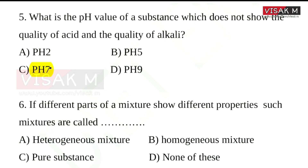pH 7 is the central point. Below pH 7 is acidic — for example, pH 5 is acid. pH 9 is alkali. So pH 7 is the correct answer: the value of a substance which shows neither acid nor alkali quality.